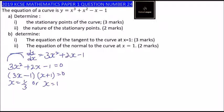When we take x to the other side it is minus 1, not 1. So we now need to find the y-values to determine the turning points. We find the value of y when x equals 1/3 and when x equals minus 1.